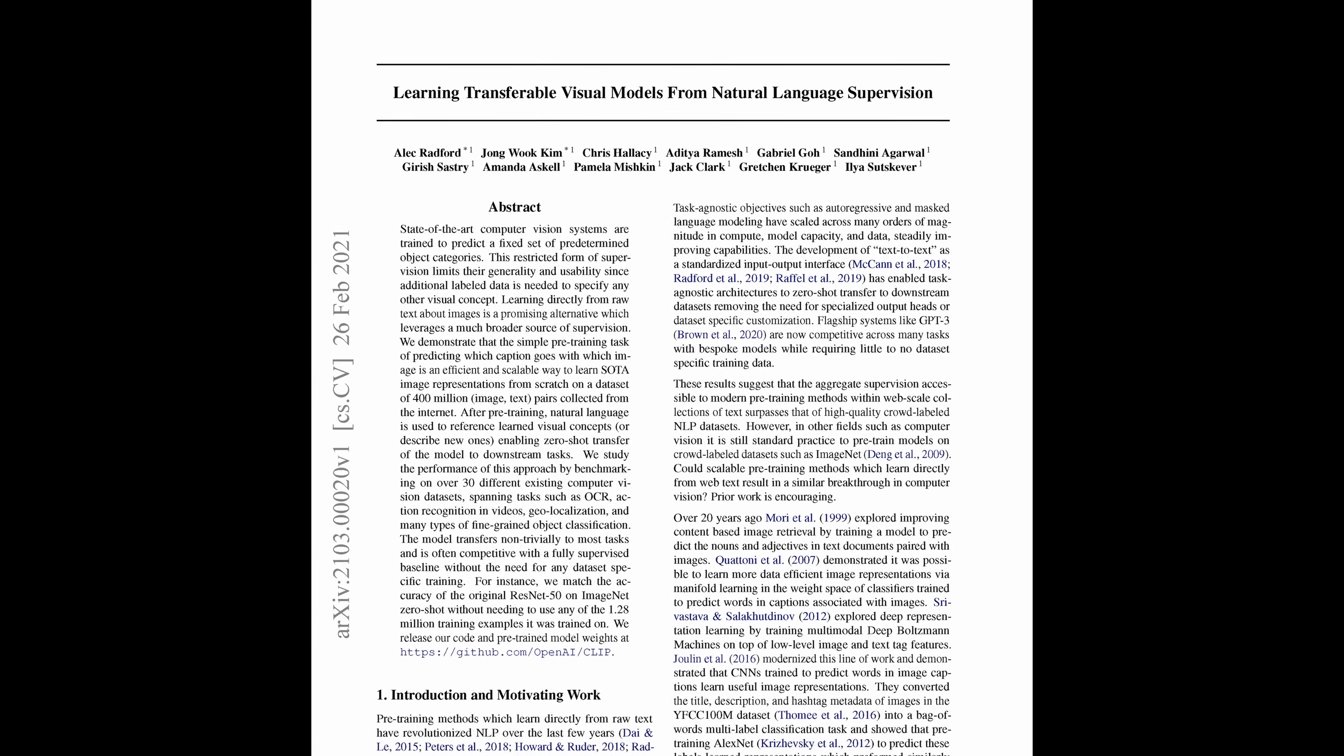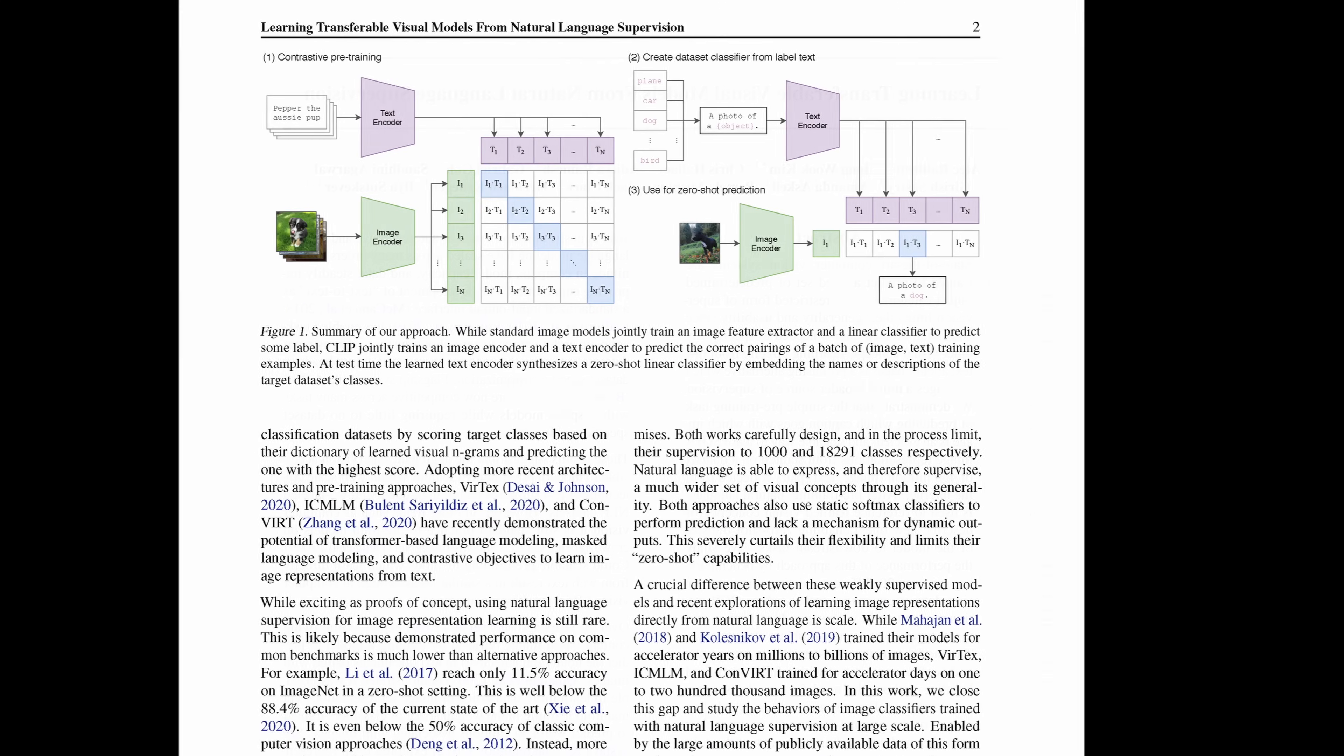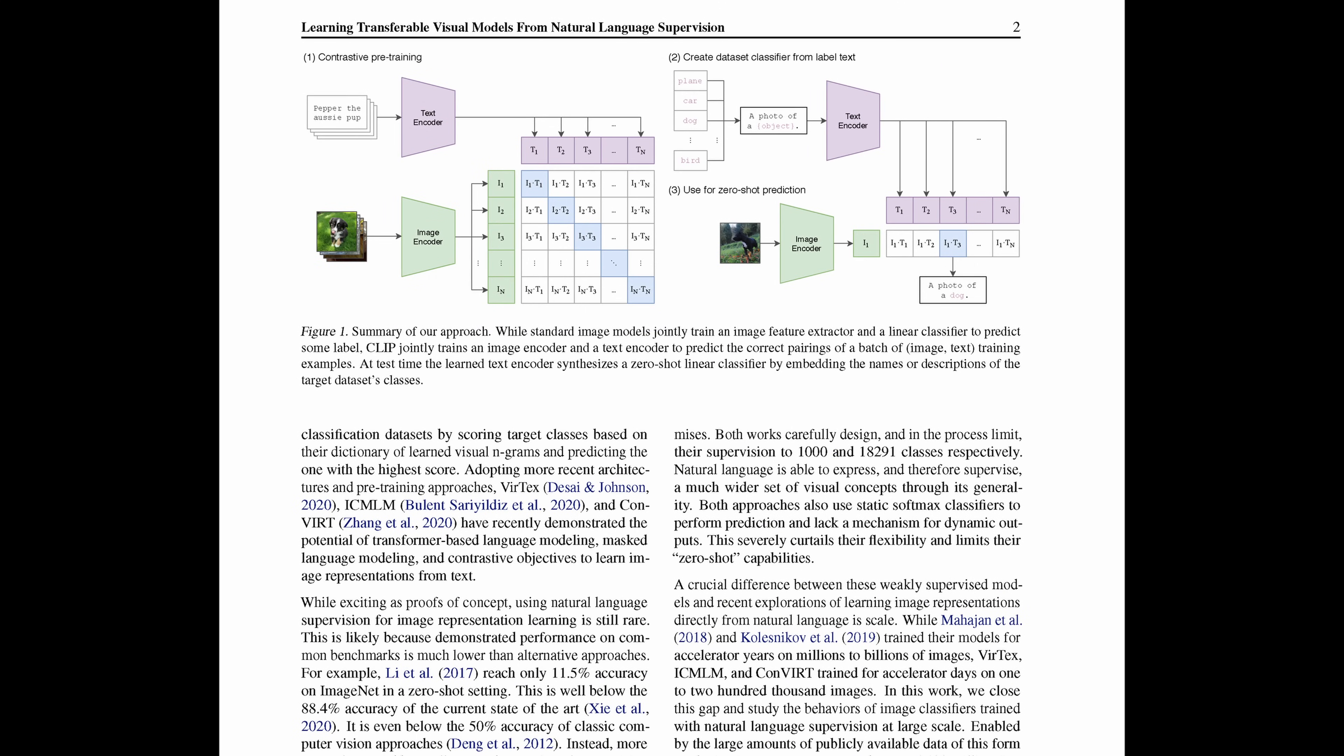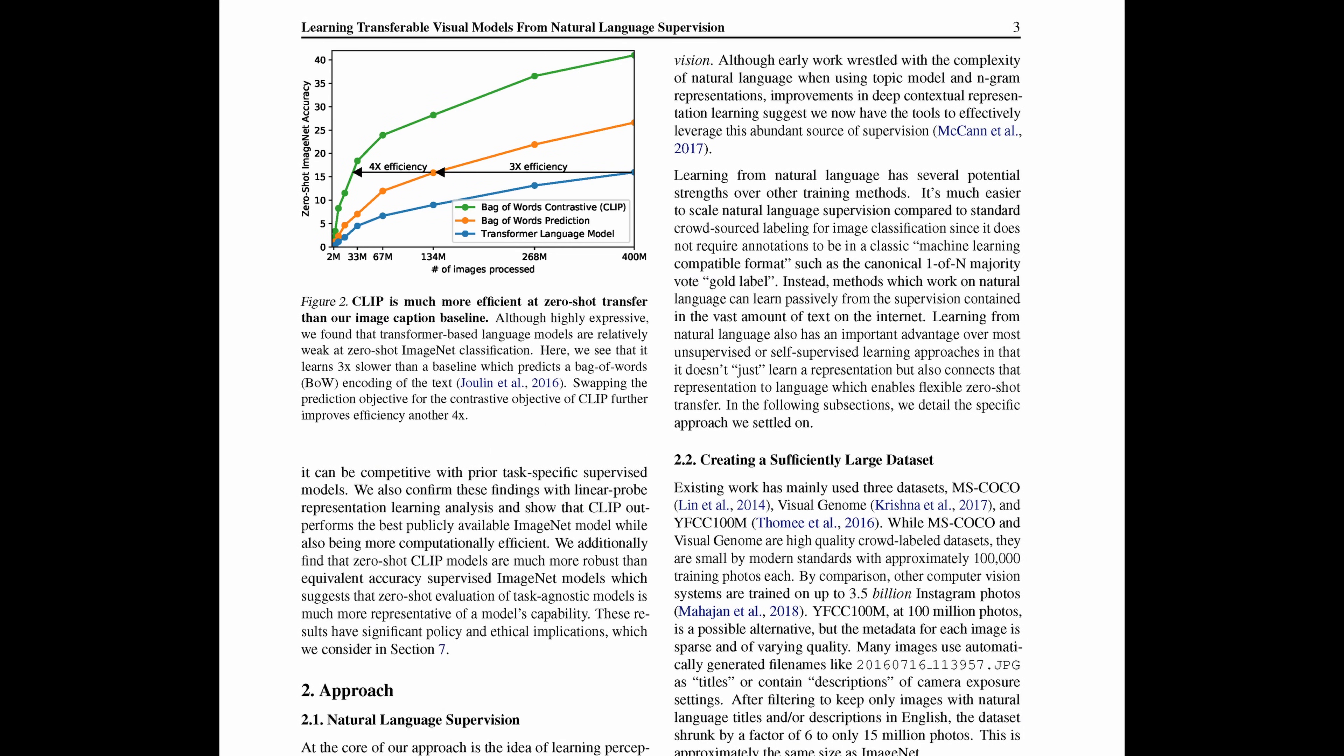Well, the first thing you need to do is collect an absolutely massive amount of data. So the clip paper that came out... In fact, I've got a copy of it. So this paper's from 2021. They collected a data set of 400 million image caption pairs, which we can talk about that collection process in a moment. That would be considered quite small by today's standards. Today, 5 billion might be a more reasonable number of images.